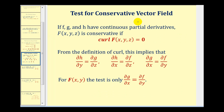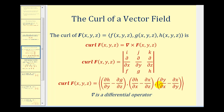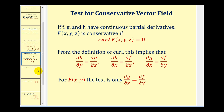The test for a conservative vector field is: if the curl of F(x, y, z) is equal to the zero vector, then the vector field is conservative. Going back to the definition of curl, if the curl equals the zero vector, then each of these partial derivatives would have to be equal to each other to result in zero for each component. So the shortcut rule is to just verify that all of those partial derivatives are equal to each other.